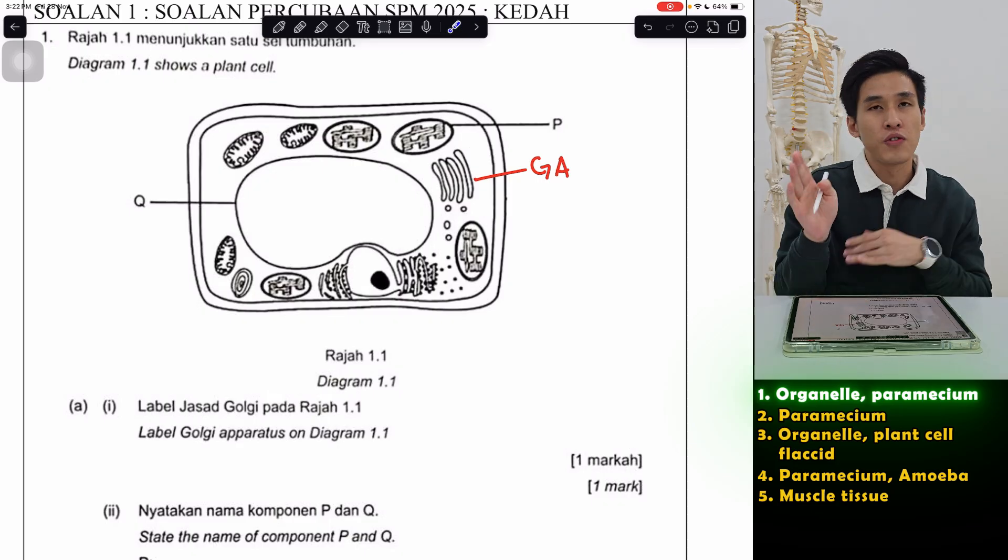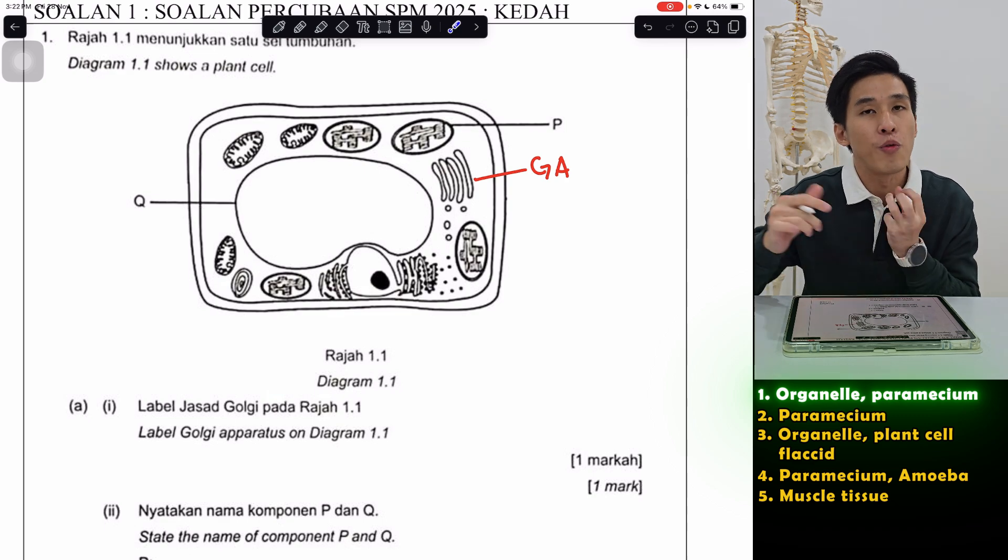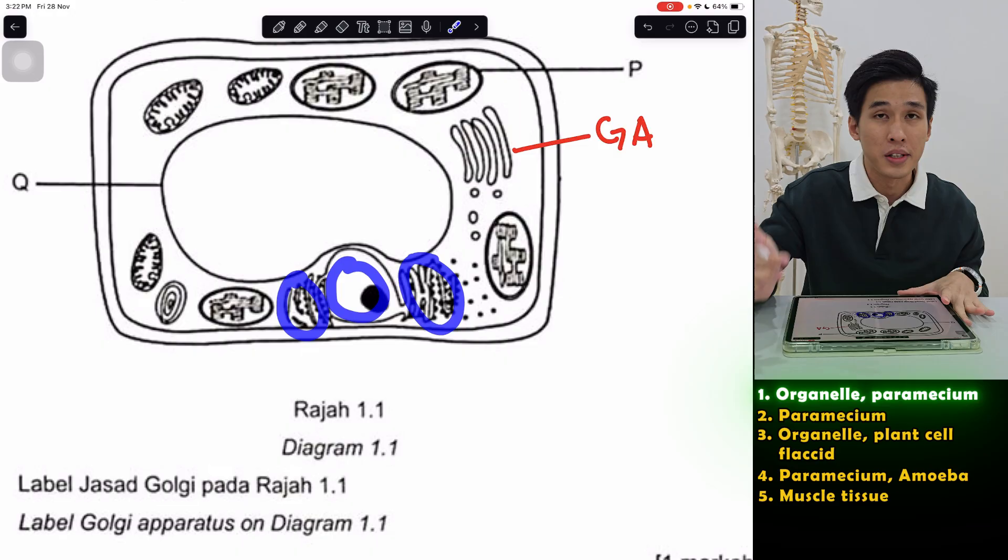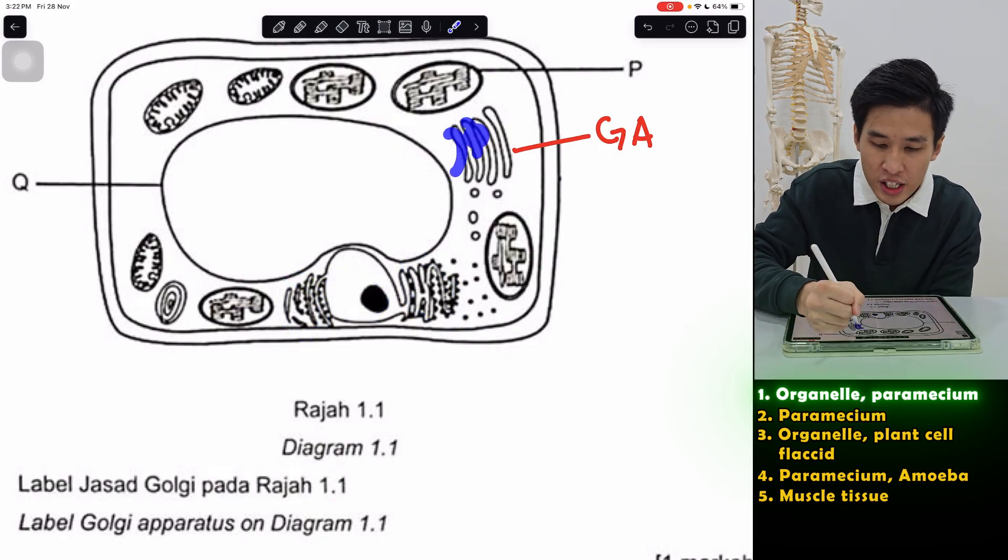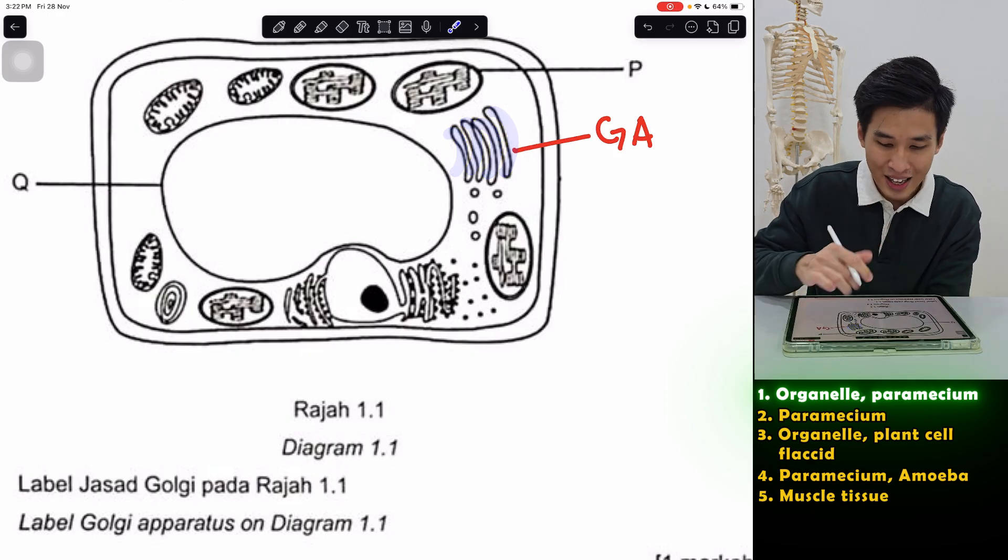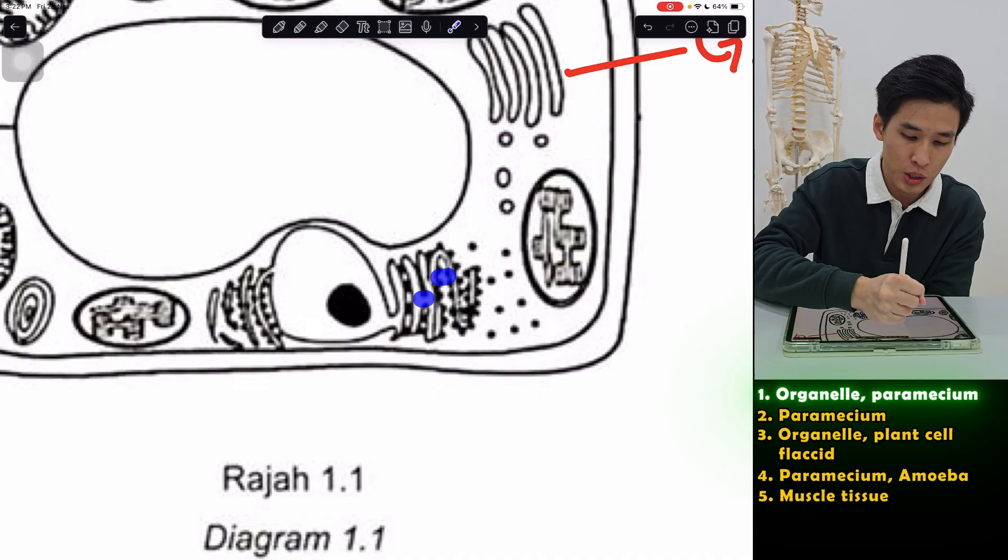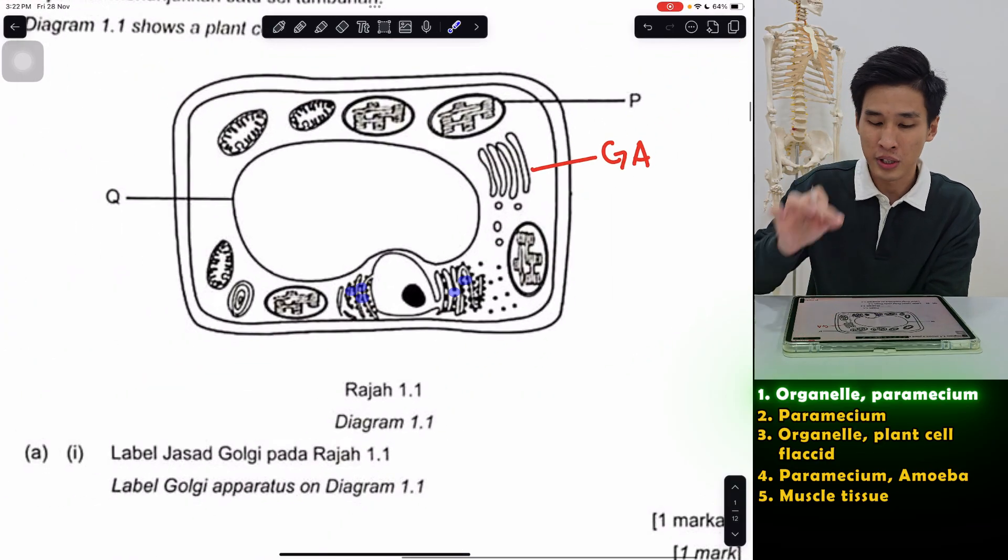Some of you might still confuse how to differentiate between Golgi apparatus and Smooth ER. Now Smooth endoplasmic reticulum along with rough, they are always most of the time right above the nucleus. That's number one. And number two, Golgi apparatus, each layer, they are not attached to each other. Unlike the ER here, which is not shown very clearly, but you can see in your textbook, they are always attached to each other. So those are the few things you can look at.